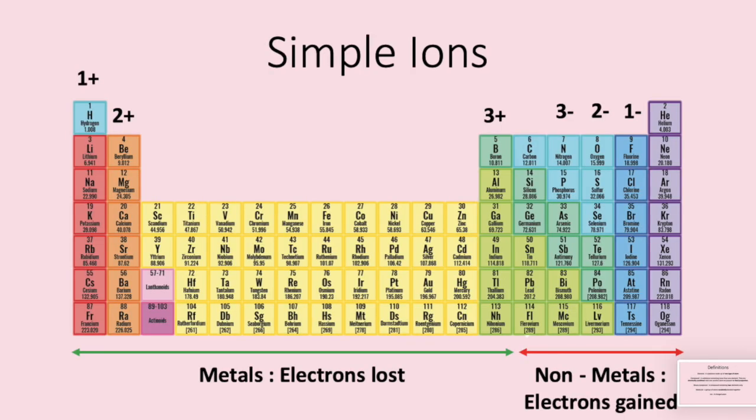Looking at the periodic table we have the metals on the left and on the right we have the non-metals. Metals always lose electrons in reactions forming positive ions. Non-metals gain electrons forming negative ions.